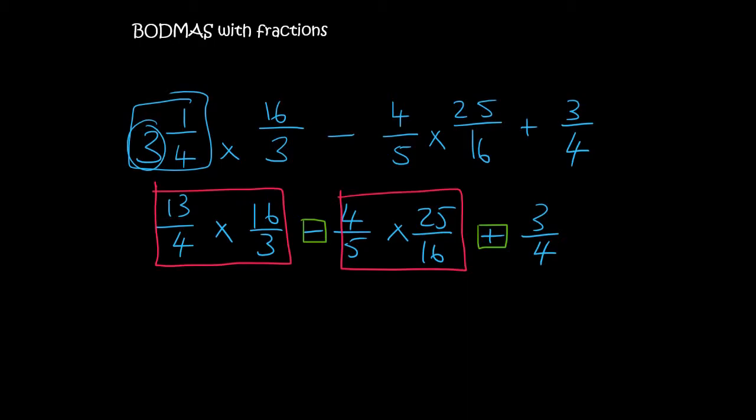So looking at this first block we could cross cancel because of multiplication. So 4 goes into there once, 4 goes into there 4 times. We can't cancel any further so now we have to multiply across. 13 times 4 is 52, 1 times 3 is 3.